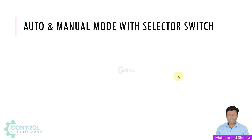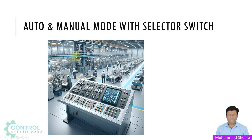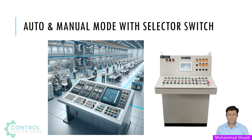In our previous tutorial we learned how to control the automatic mode and manual mode through the faceplate. But in this tutorial video we will learn how we can control the auto and manual mode with the selector switch, because sometimes the operator or project requirement is to control different equipment or motors for auto/manual operation through the control panel. Let's understand a few of the configuration steps.